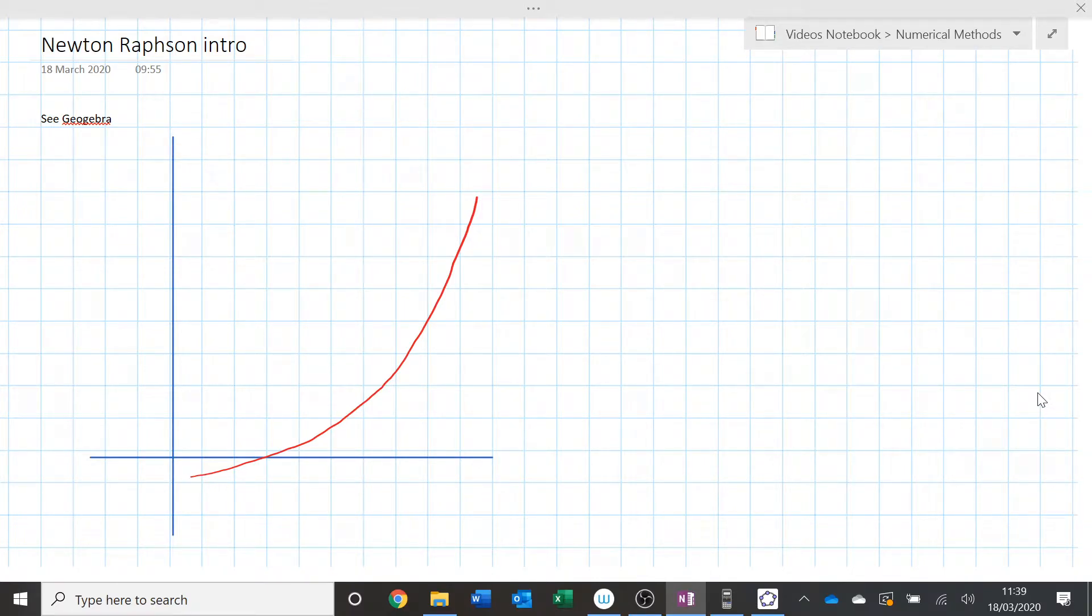It's the most powerful because it's really quite resilient and seems to always find routes, whereas the other ones have significant problems where you'll be trying to find a route, you find a different route or it doesn't work or it diverges. There is one case where Newton-Raphson doesn't work, but it's rare. So this is Newton-Raphson.